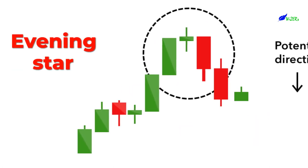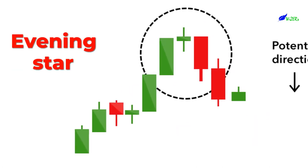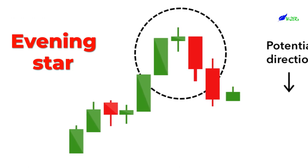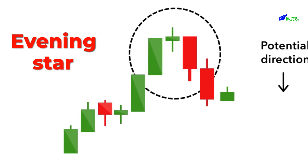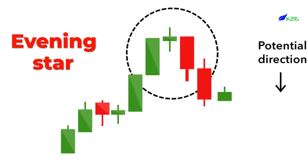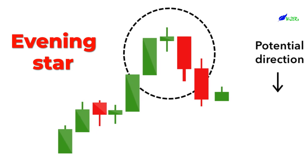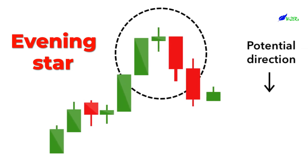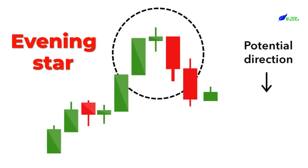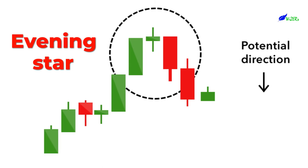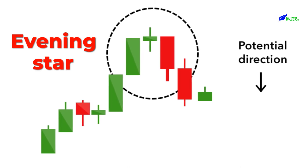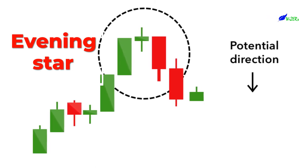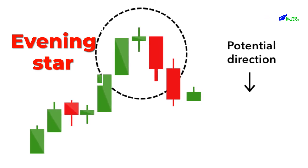Evening Star. The Evening Star is a three-candlestick pattern that is the equivalent of the bullish Morning Star. It is formed of a short candle sandwiched between a long green candle and a large red candlestick. It indicates the reversal of an uptrend and is particularly strong when the third candlestick erases the gains of the first candle.